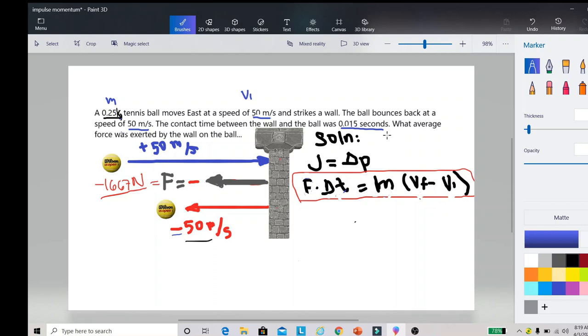Let us see if we are now ready to plug in the values. The mass is given, the velocity initial is given, the final velocity is also given, as well as the change in time. Therefore, the only thing unknown is the force, which is required by the problem.